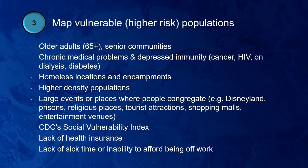Step three is mapping vulnerable or higher-risk populations. Some people are at higher risk of severe disease with COVID-19, like older adults and those with chronic medical problems. Some may be at higher risk for transmitting disease, like people in high-density populations. People can have vulnerabilities related to socioeconomic status, such as those experiencing homelessness or lacking health insurance. All of these factors are distributed differently across our communities.